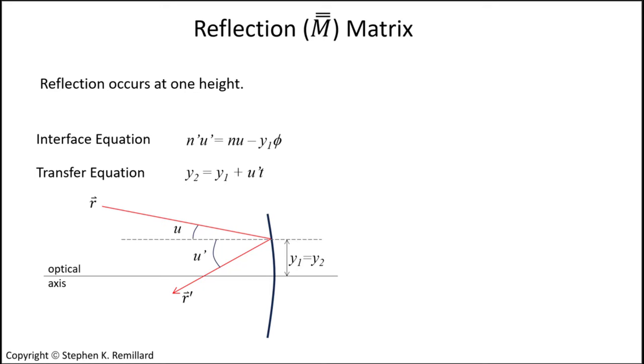So let's construct the reflection matrix. If a ray encounters a mirror and reflects, the mathematical description goes like this: an incident ray vector R is operated on by a matrix M, producing an outgoing ray vector R prime. Writing this out explicitly, the ray vector components are nu and y. I'll just write the matrix elements as a, b, c, d, and the next question is what are a, b, c, and d?